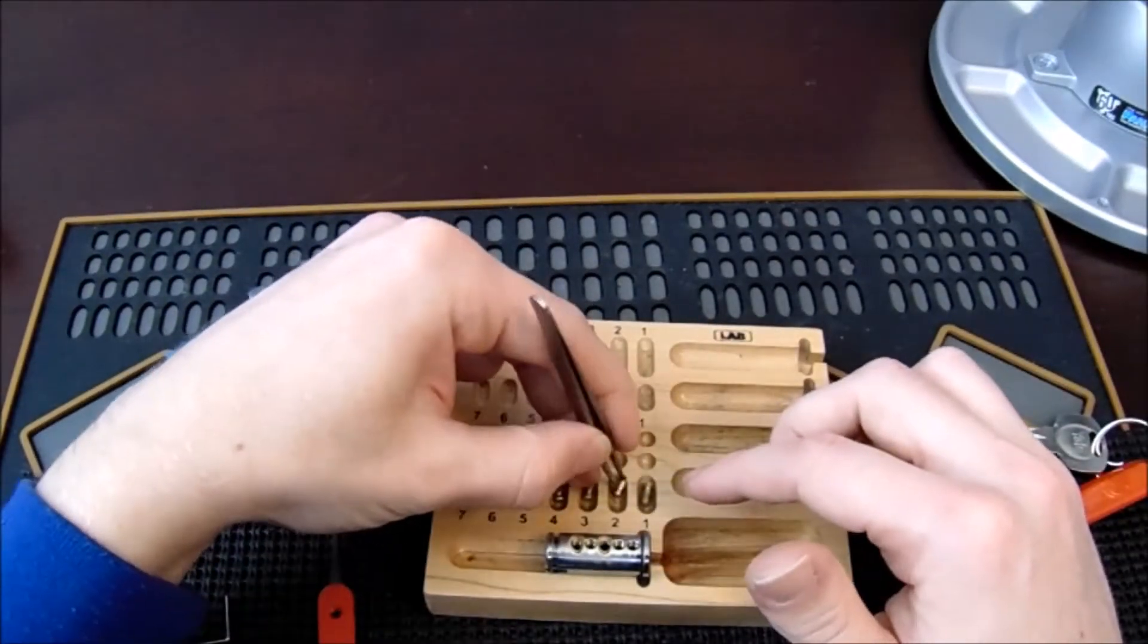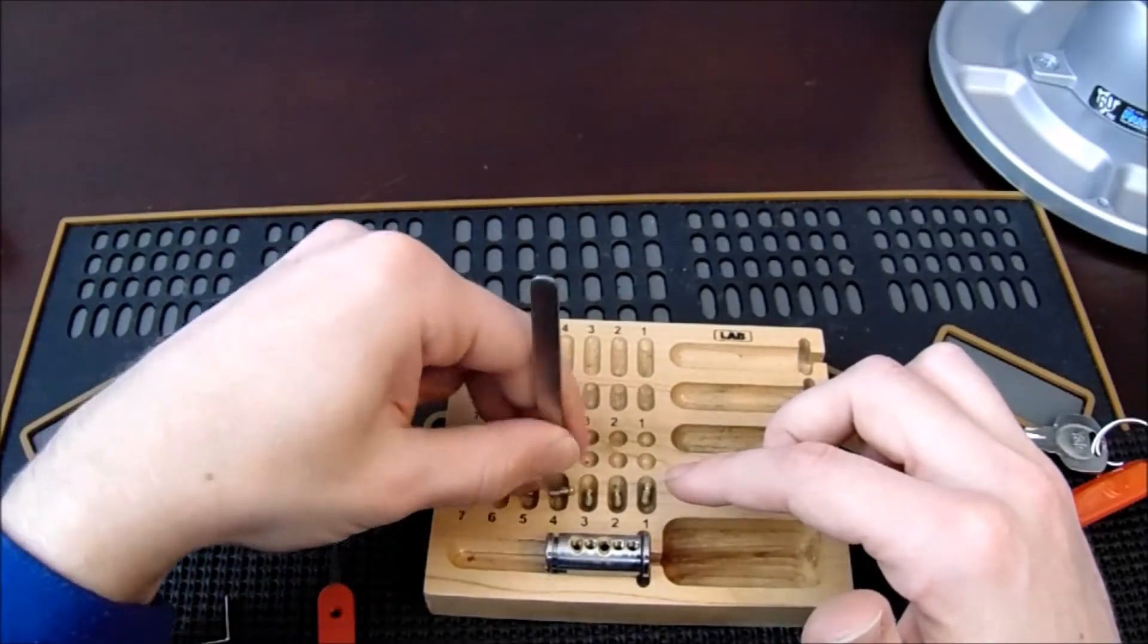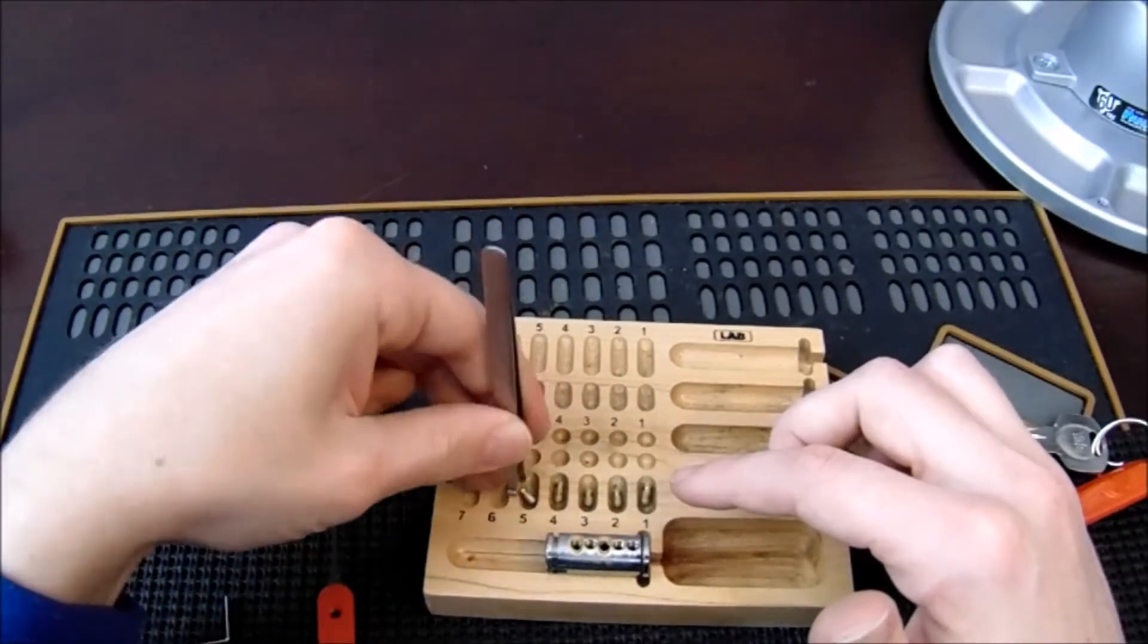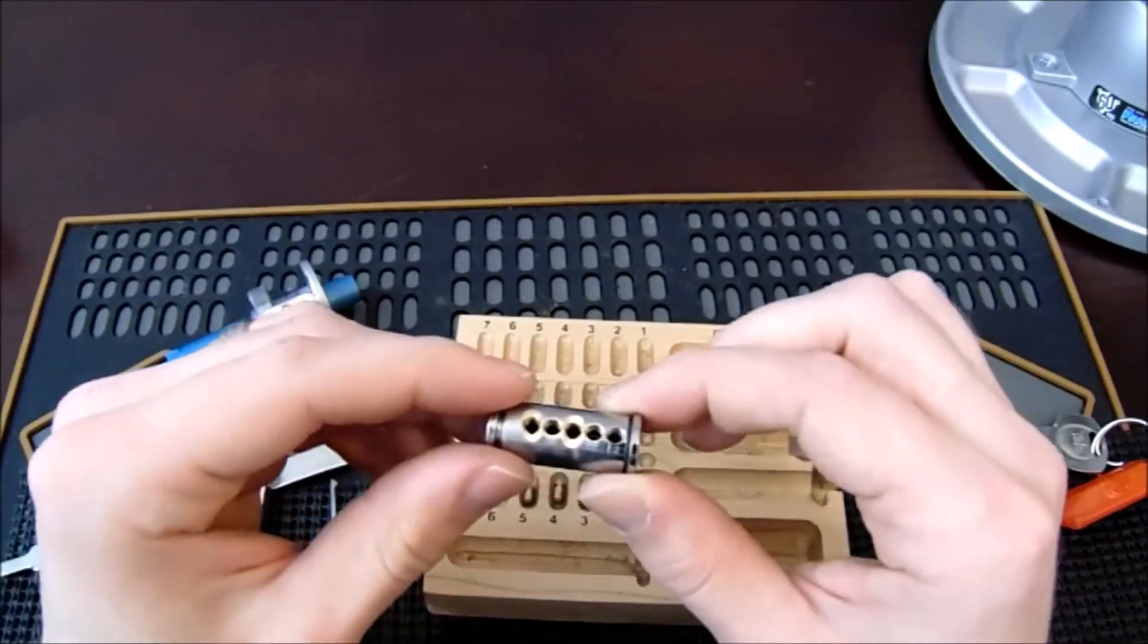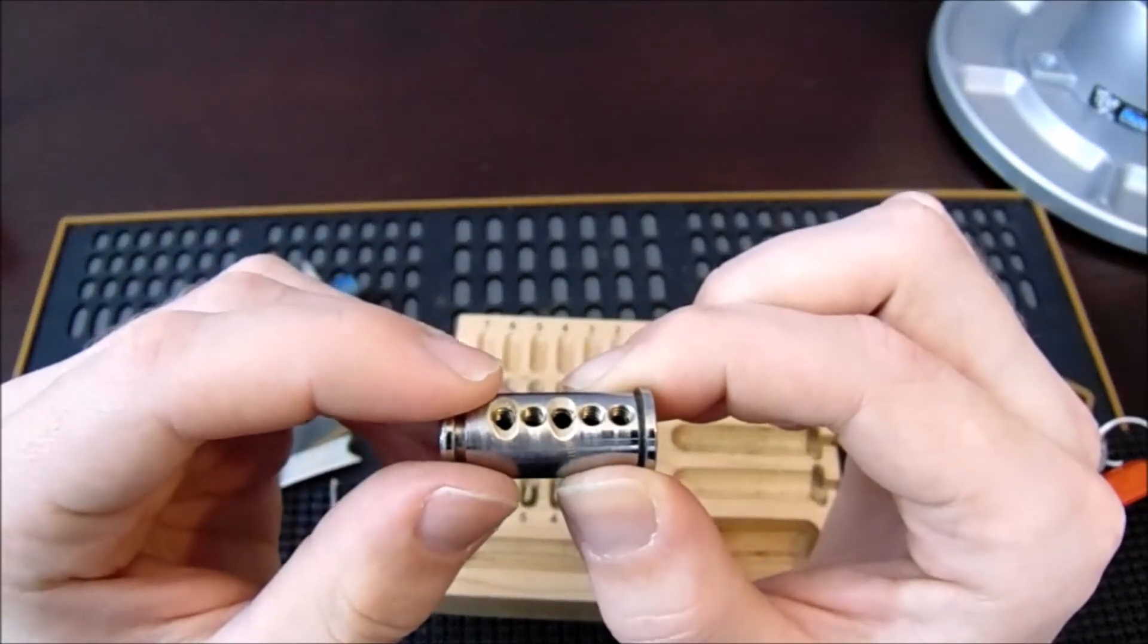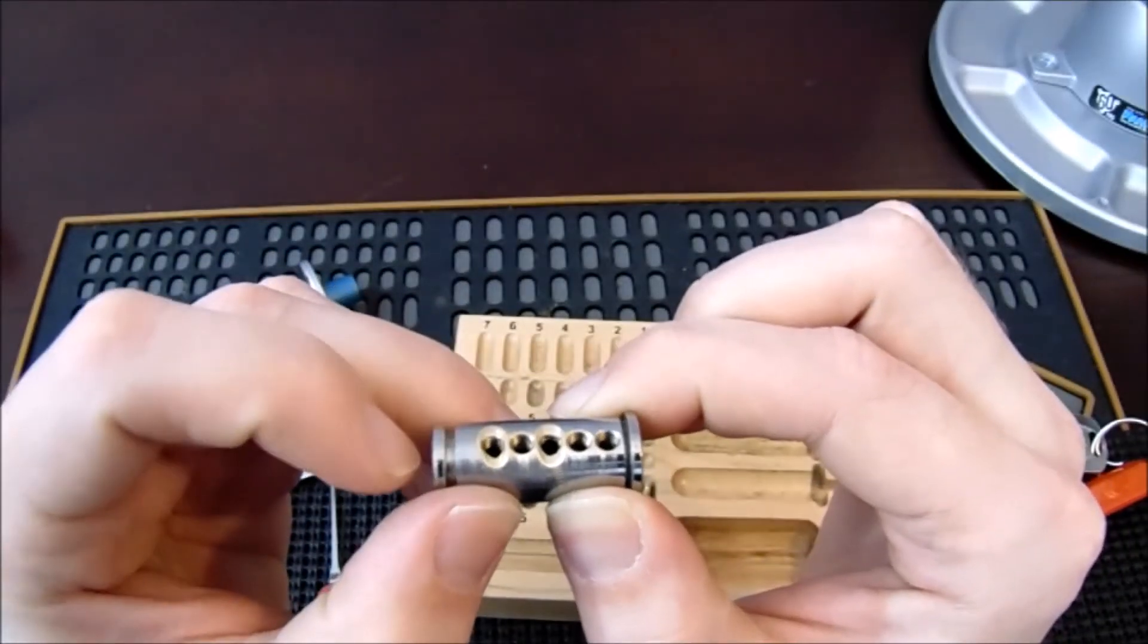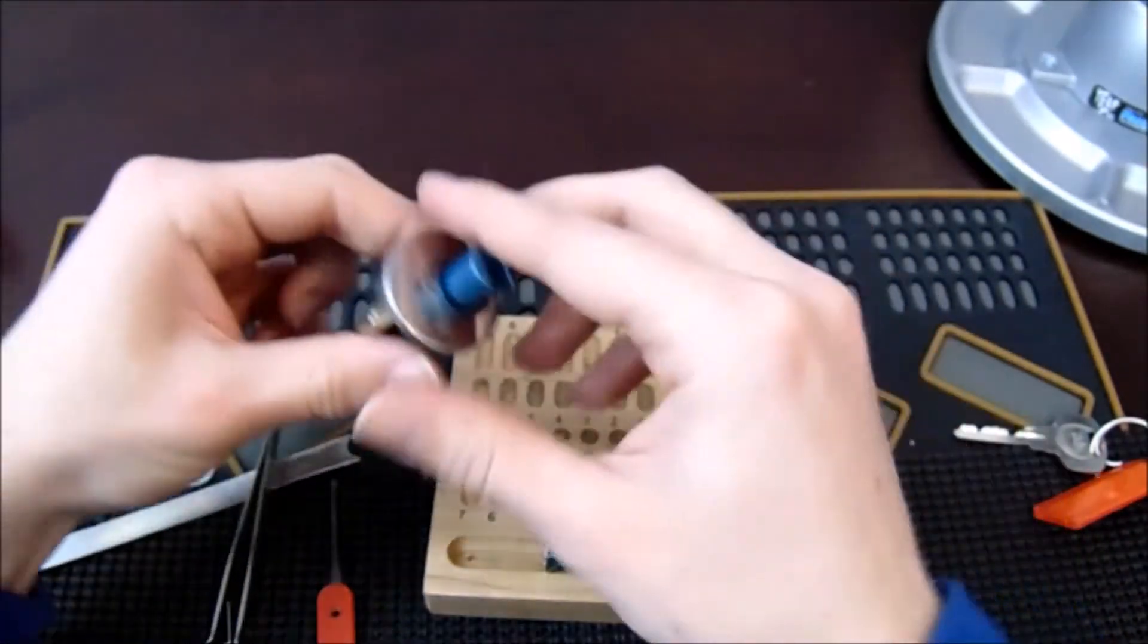Then looking over at the plug here, I can see that it is threaded in every chamber. It looks like they have some counter milling on chambers three and five. Now moving upstairs to the Bible.